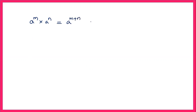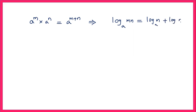From the exponential law, a power m into a power n equals a power m plus n. By applying logarithm, we can say that in logarithms this becomes the product law: log of m times n to the base a equals log m to the base a plus log n to the base a.